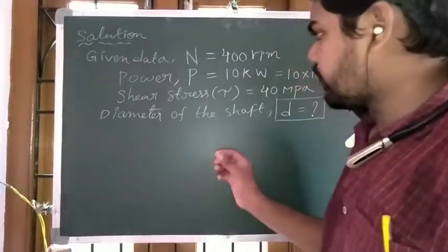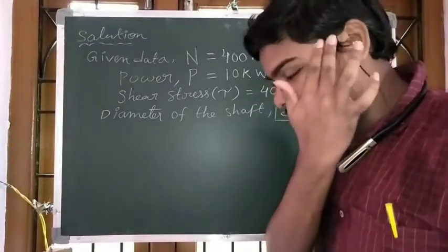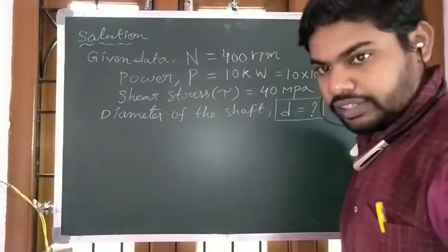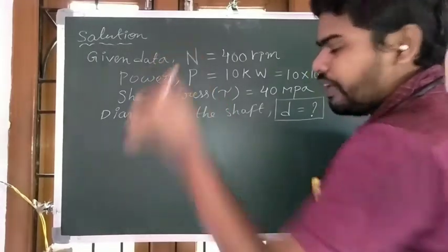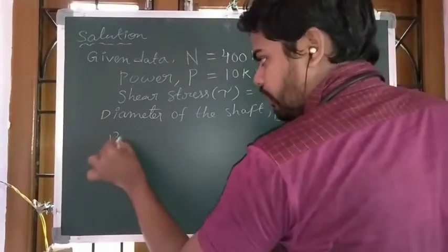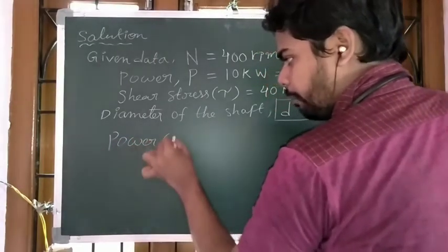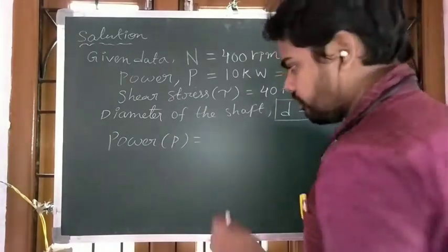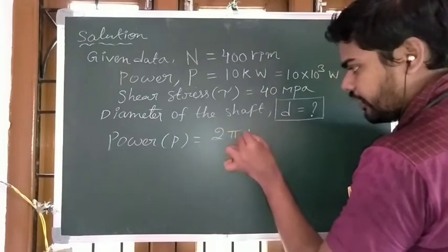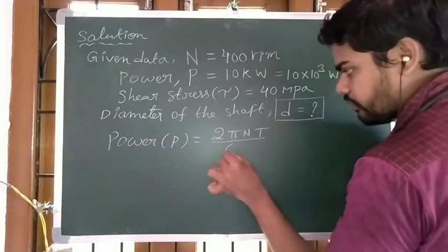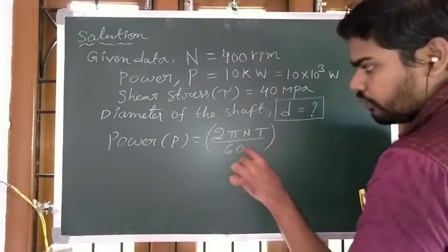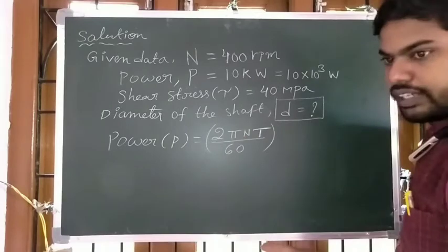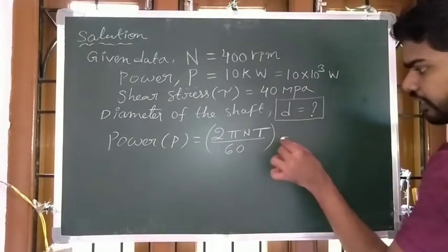First step: since we have power and speed, use the power formula. P is equal to 2πNT divided by 60. The only unknown here is torque T, which is the torque transmitted by the shaft, so we can calculate torque.